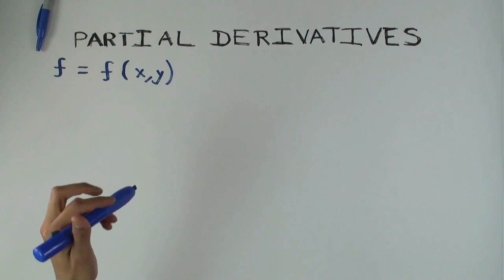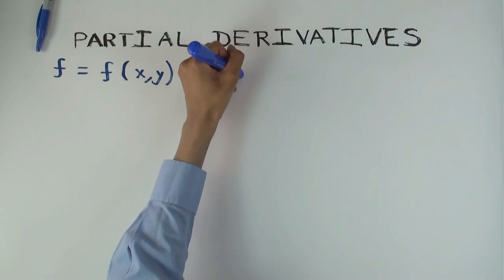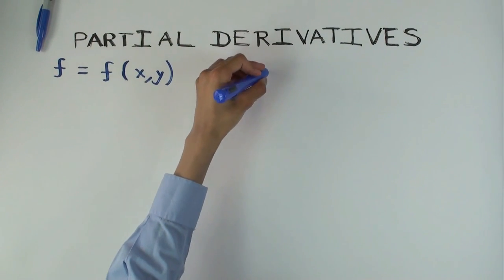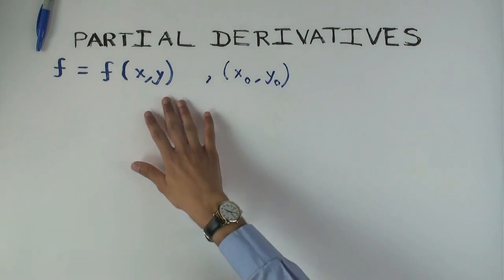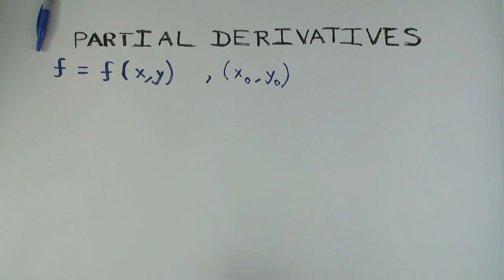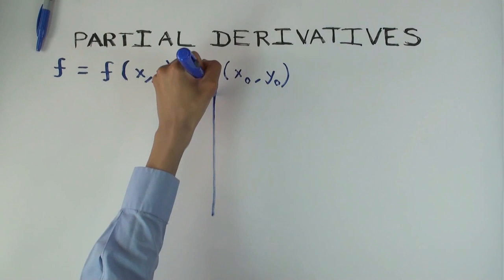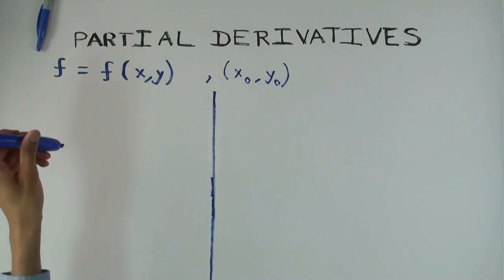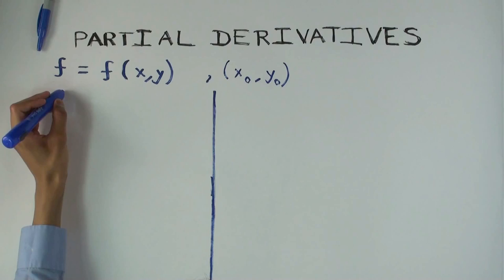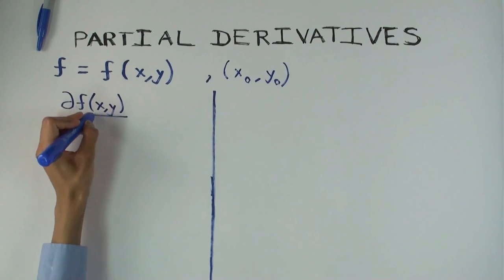We are doing everything at a single point, so I should specify the point. We are working at a point x-naught, y-naught, which is a point in the domain of the function. The goal is to describe what the derivative of f is at this point. The derivative with respect to x at this point is denoted like this.